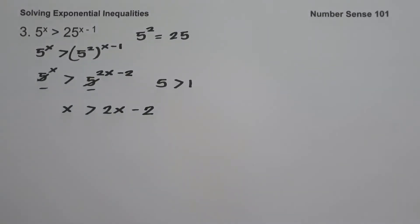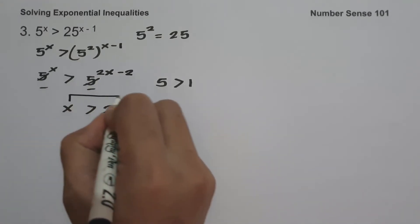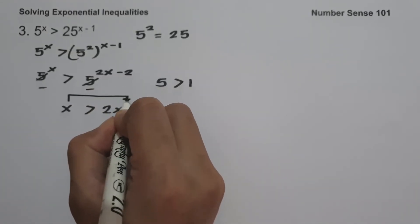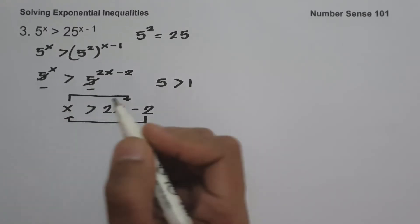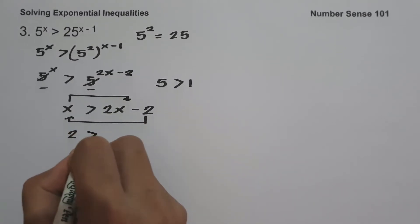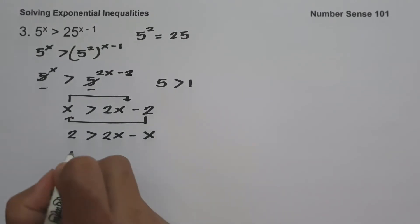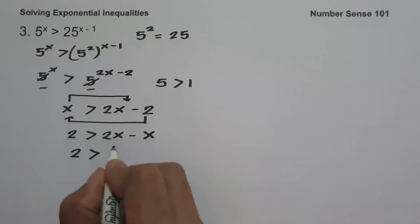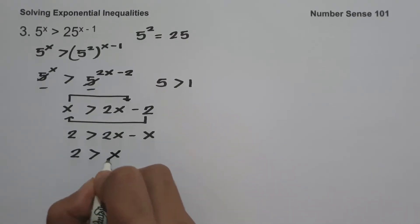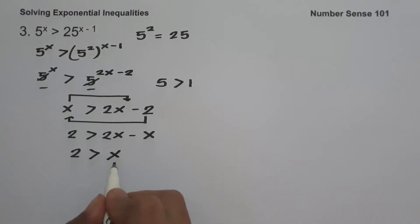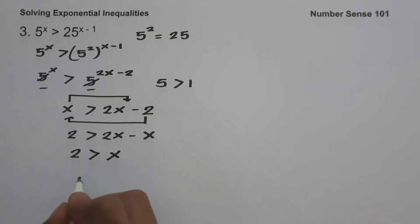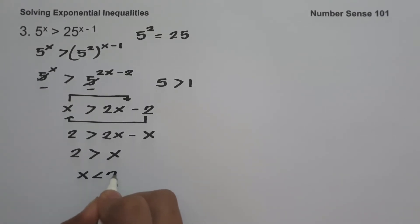To find the value of x, here are two solutions. First, move x to the side of 2x minus 2 and negative 2 to the side of x. This gives 2 greater than 2x minus x, which simplifies to 2 greater than x. Reading with the variable first: x is less than 2.